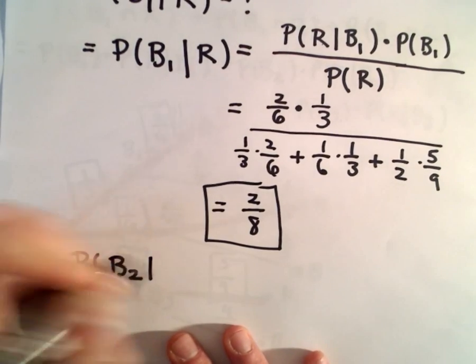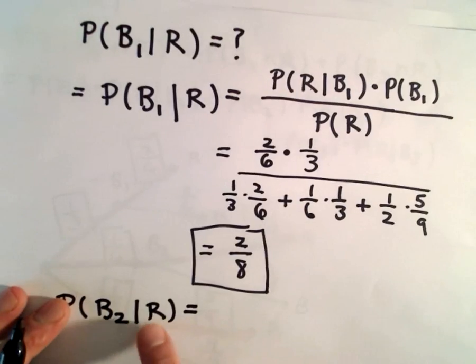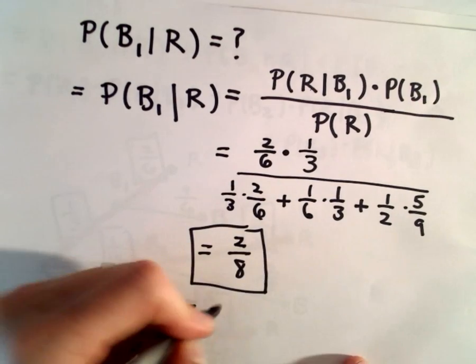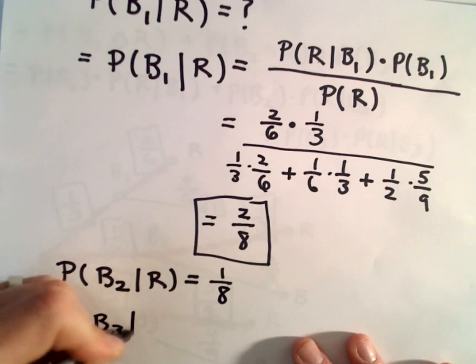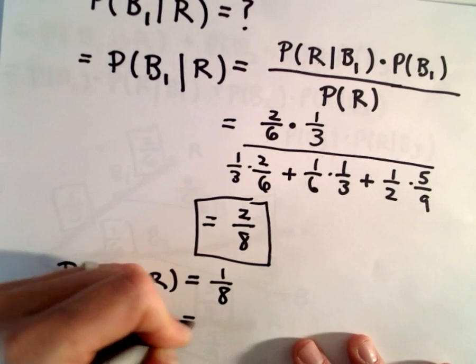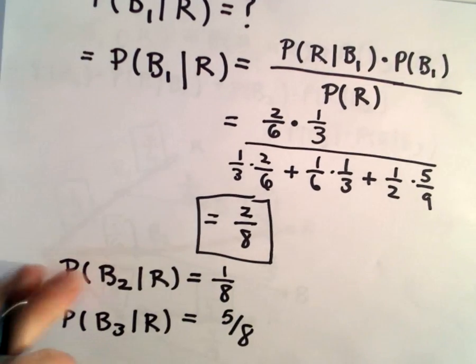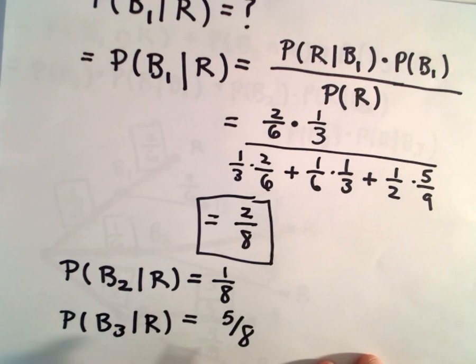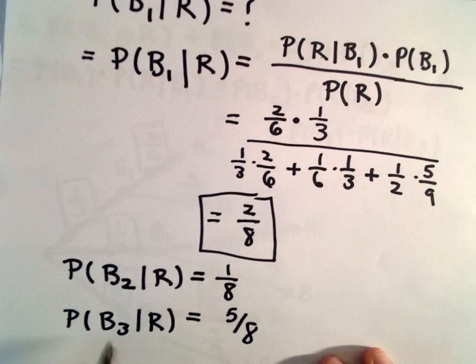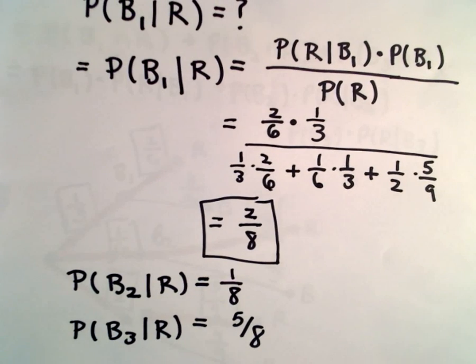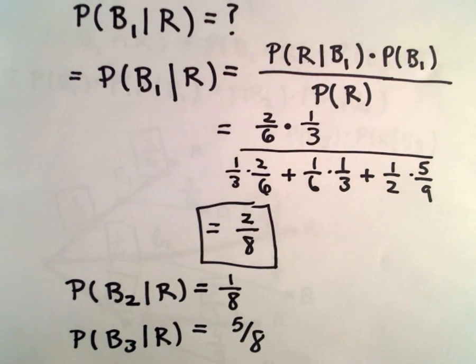And you can actually compute these as well. The probability that the second bowl was selected, given that we drew a red coin, you can go through the same argument. I got this to be only one-eighth. And the probability that the third bowl had been selected, given that we drew a red coin, that actually comes out to be five-eighths. So if you had picked a red coin, there's an over 50% probability that it actually did come from the third bowl. So again, I think these are super interesting problems.